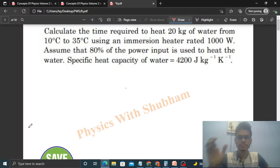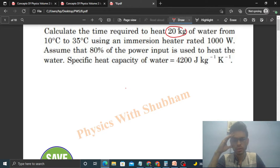Okay, hi everyone. So today let's discuss this interesting problem. It says calculate the time required to heat 20 kilogram of water from 10 degrees Celsius to 35 degrees Celsius using an immersion heater rated 1000 watt. Assume that 80 percent of the power input is used to heat the water. Specific heat capacity of water is given.